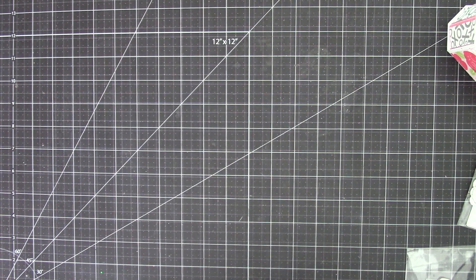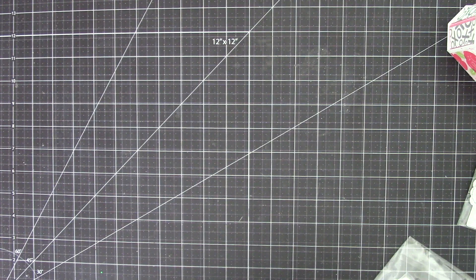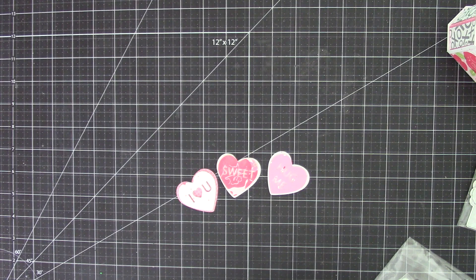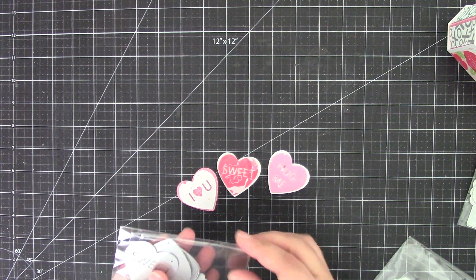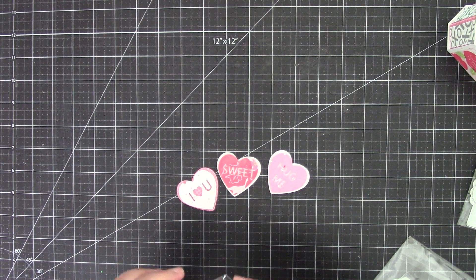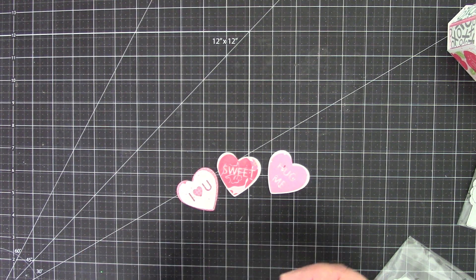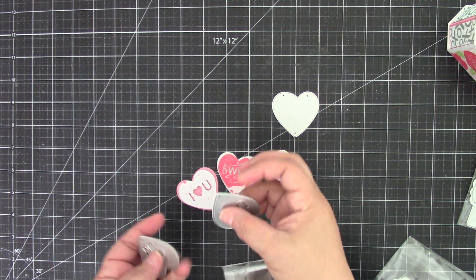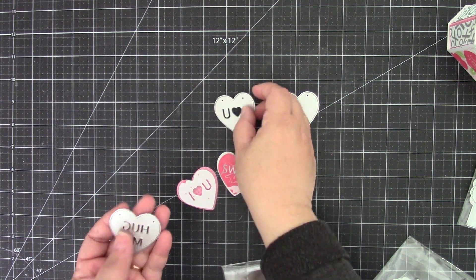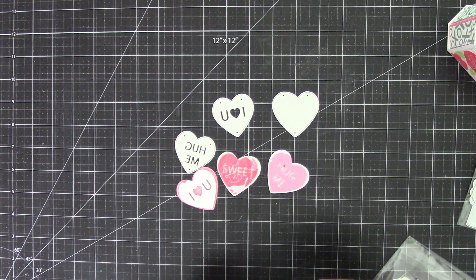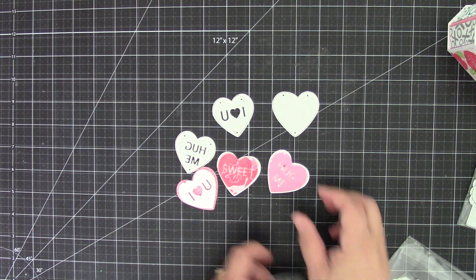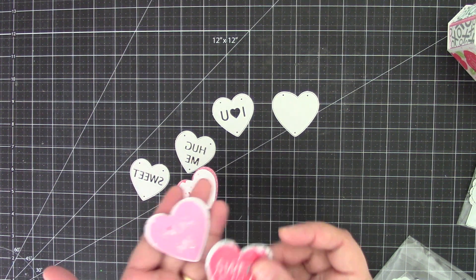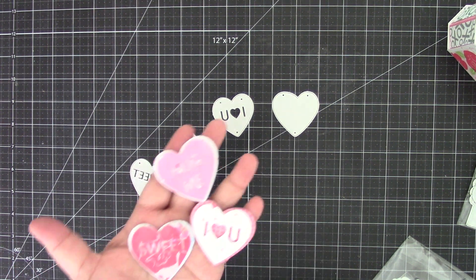And then the last one are the conversation hearts. Love these. So you get four different sizes. You get the backing of the heart, which is just a solid heart. So you get this one right here. And then you get three that have a sentiment. I love you. Hug me. And then sweet. There's this one. And so I just added some pop dot underneath the top layer. And you can make some fun conversation hearts. So that is my project share for KSCraft.